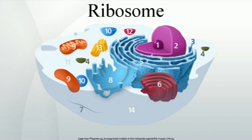Each subunit is composed of one or more ribosomal RNA molecules and a variety of proteins. The ribosomes and associated molecules are also known as the translational apparatus.